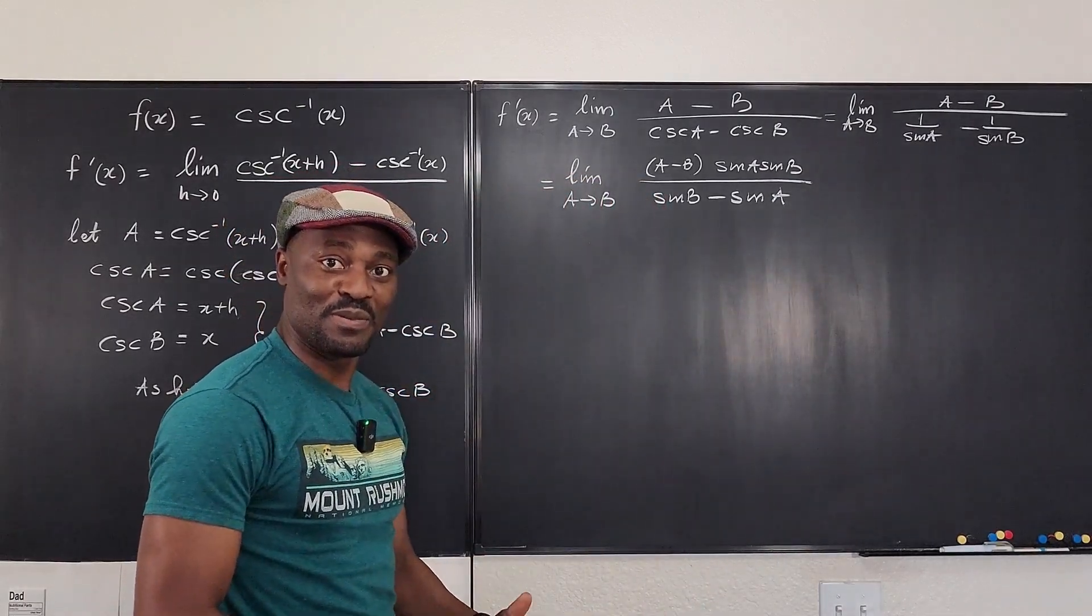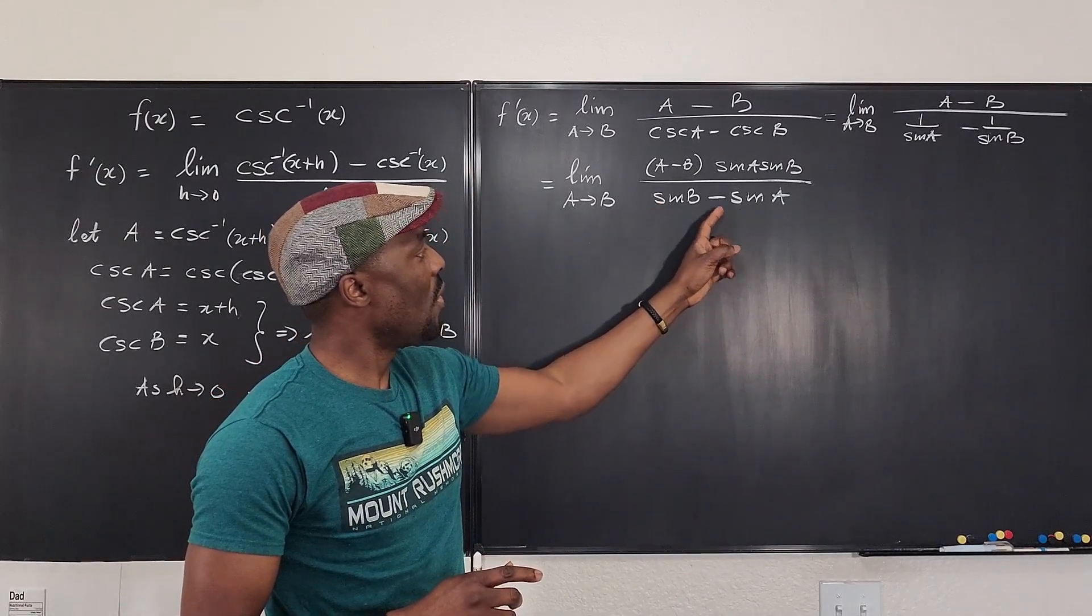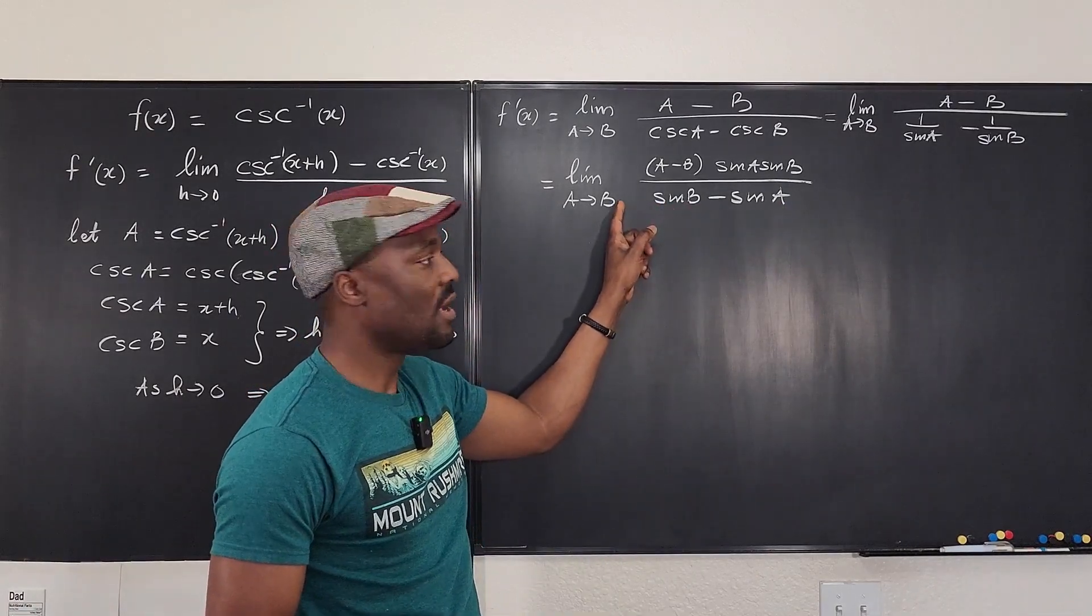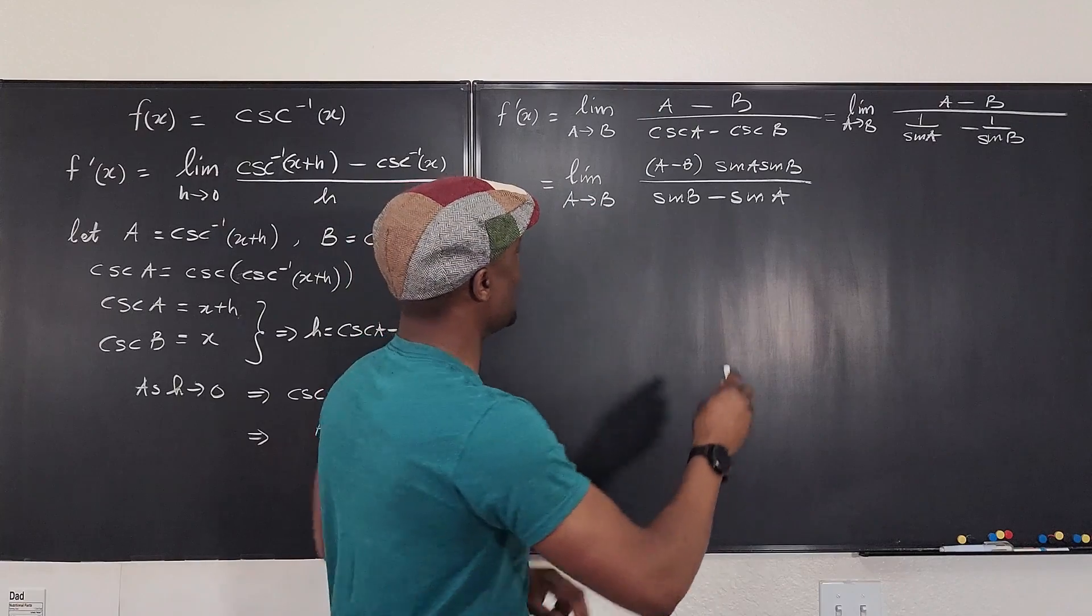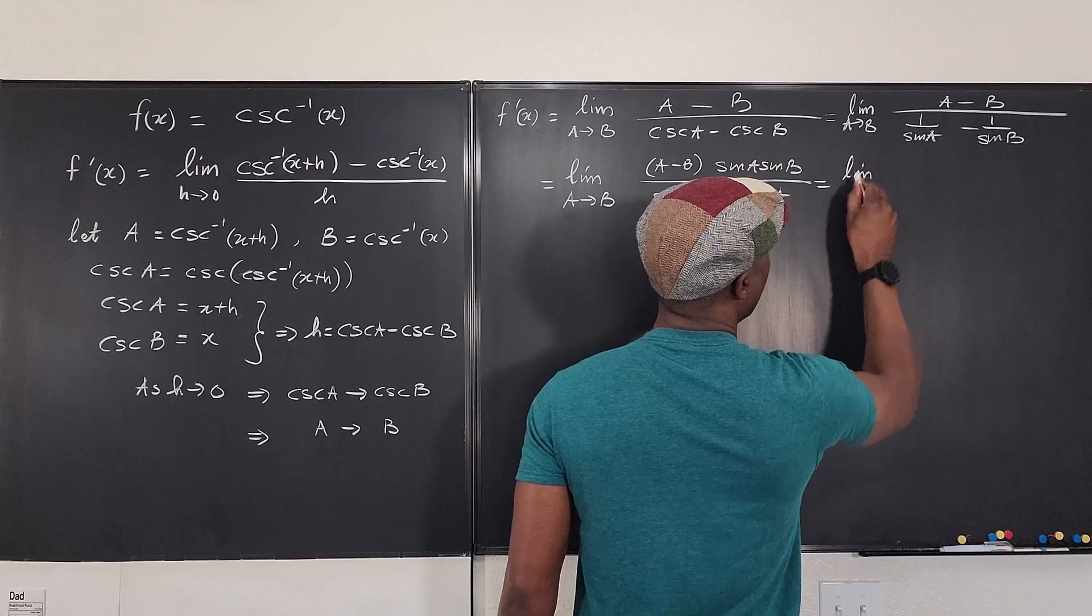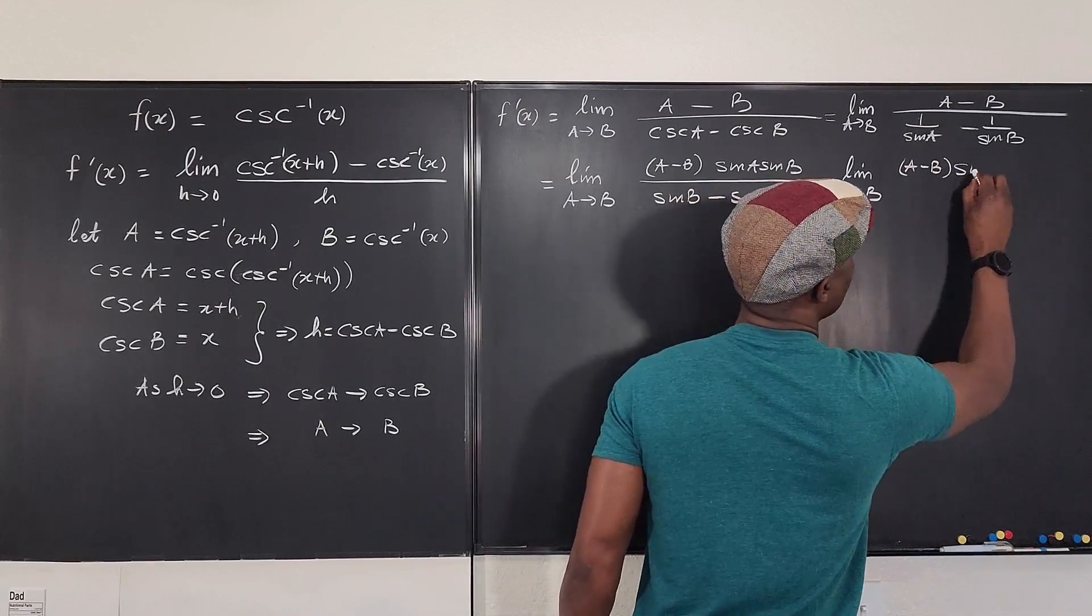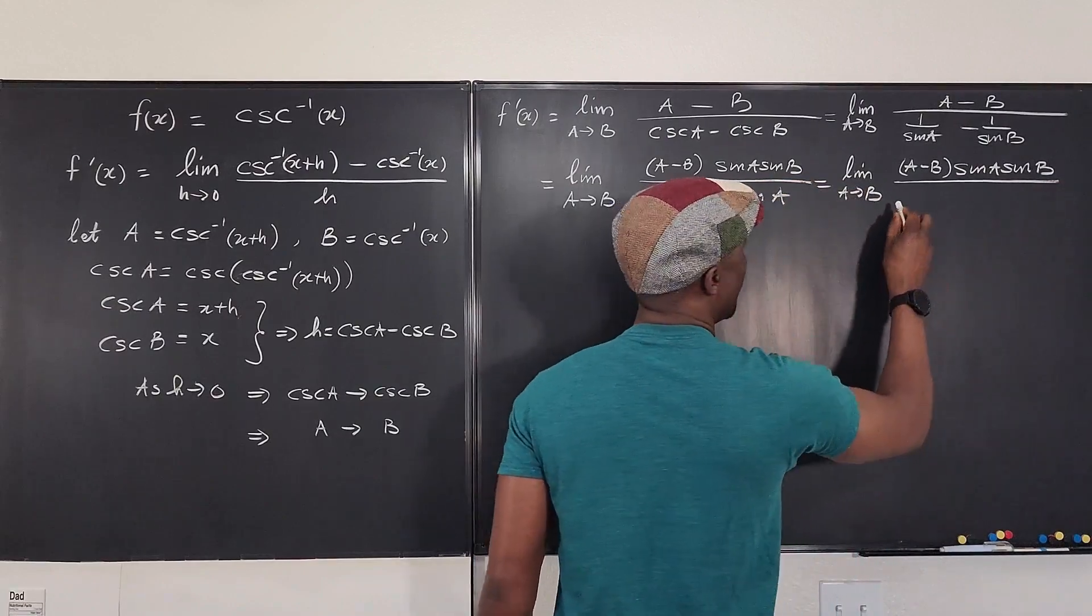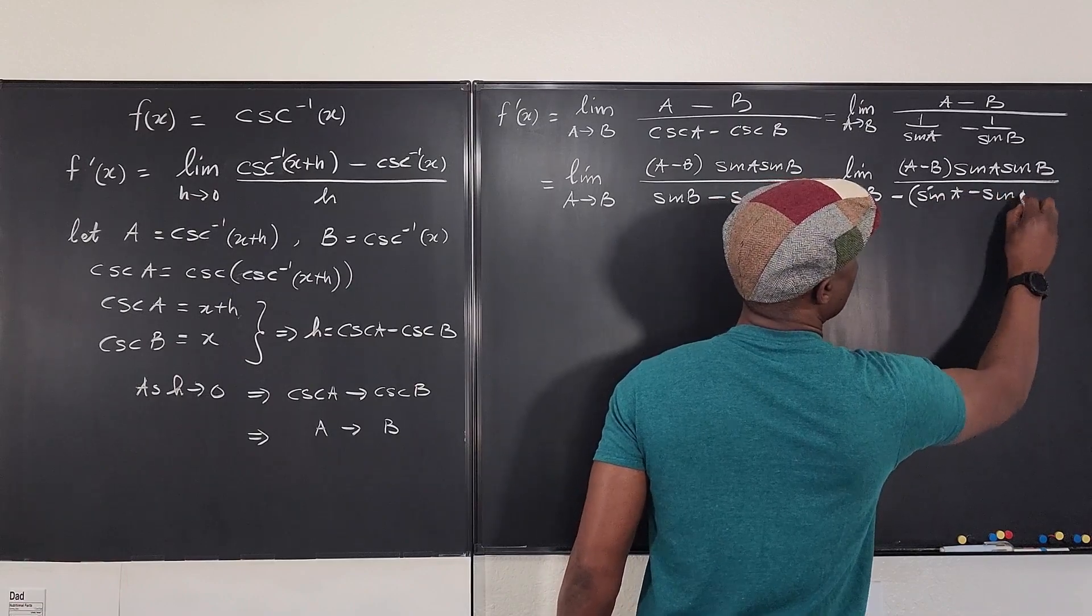Now, I can rewrite this expression. One over sine a minus one over sine b can be written as sine b minus sine a over sine a sine b. And the sine a sine b can go up. So if you simplify this expression, this is the limit as a approaches b of a minus b times sine a sine b over sine b minus sine a.